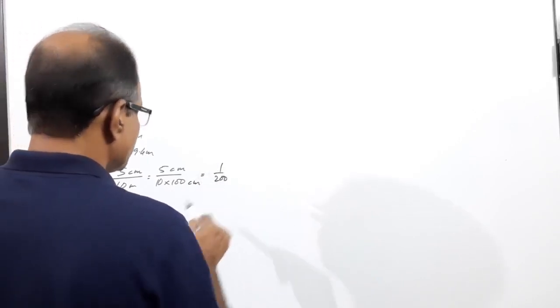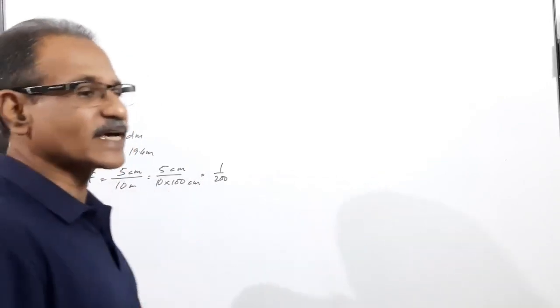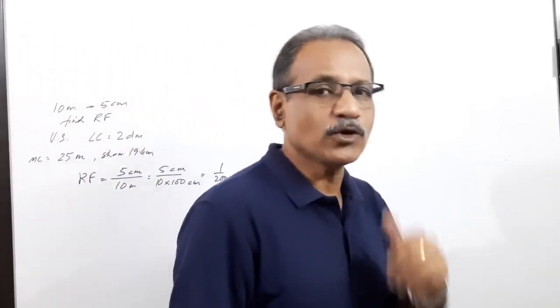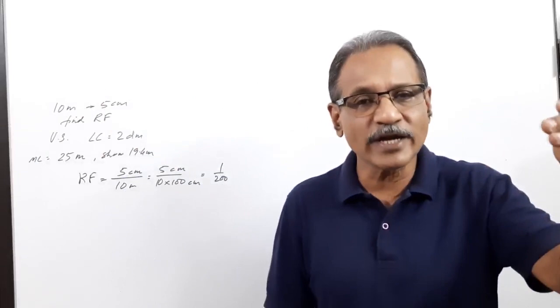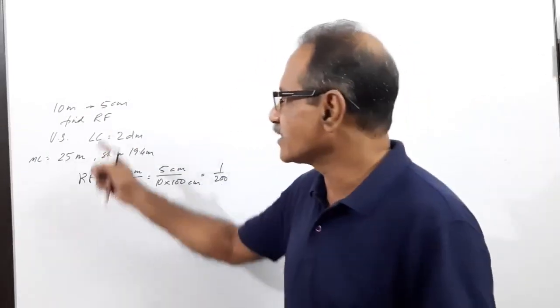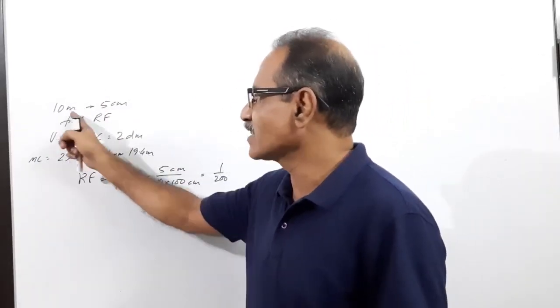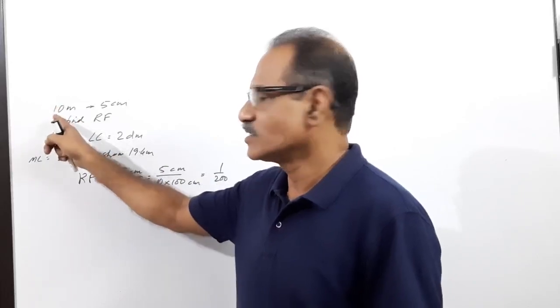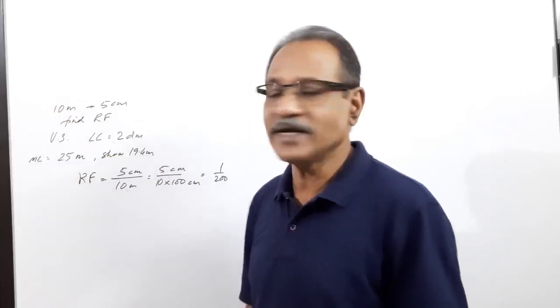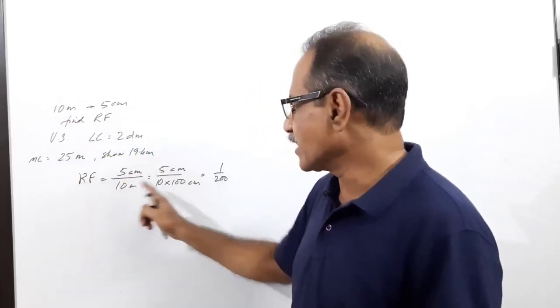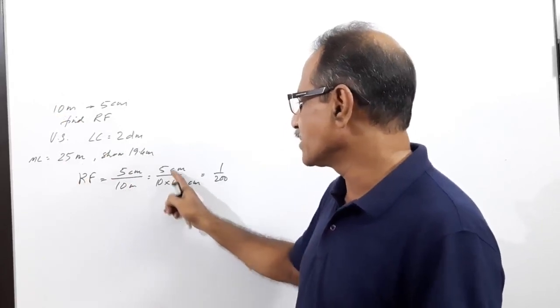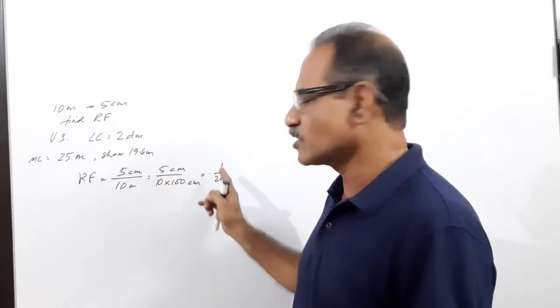The RF of the scale is calculated as 1 by 200. RF is length in the drawing divided by the actual length. Length in the drawing is 5 centimeters, actual length which it represents is 10 meters. So 5 centimeters by 10 meters, converting 10 meters into centimeters, you get 1 by 200.